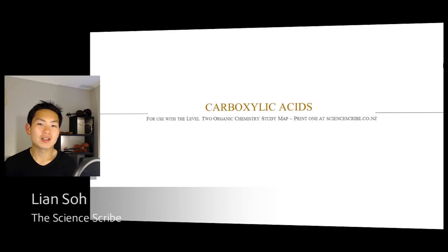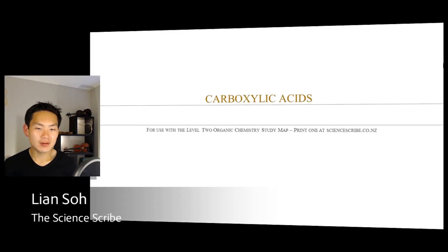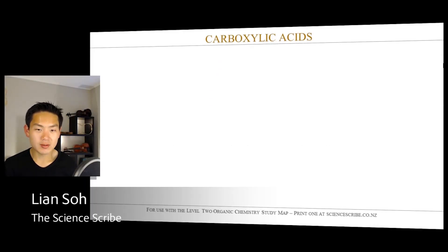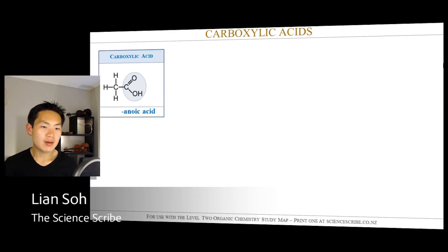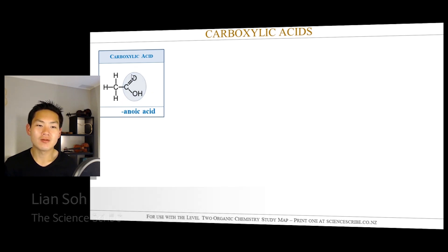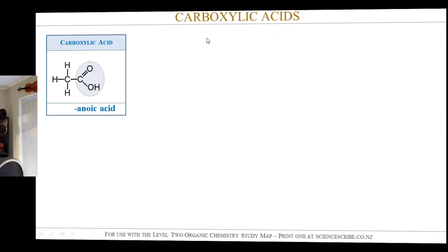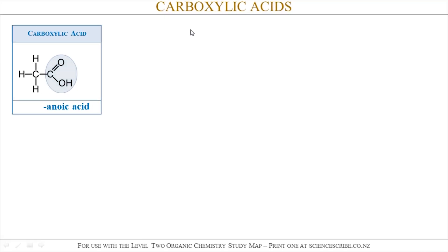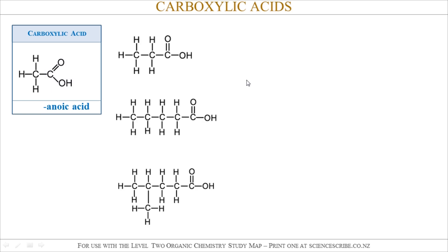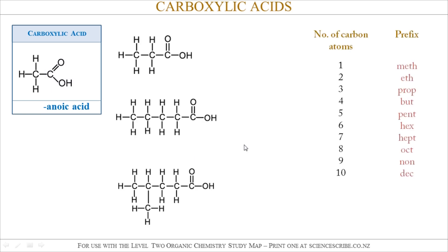We're going to be looking at carboxylic acids for Level 2 organic chemistry. Carboxylic acids are all organic molecules which contain the carboxylic acid functional group, which I've highlighted here. Some examples of carboxylic acids are shown.